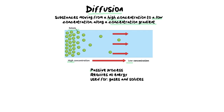Diffusion is a passive process — it will occur on its own, requiring no external stimulation and no energy. We use diffusion to describe the movement of gases or solutes. You've probably heard about diffusion when discussing how carbon dioxide and oxygen exchange in the alveoli, as well as how solutes distribute when you stir salt into water.